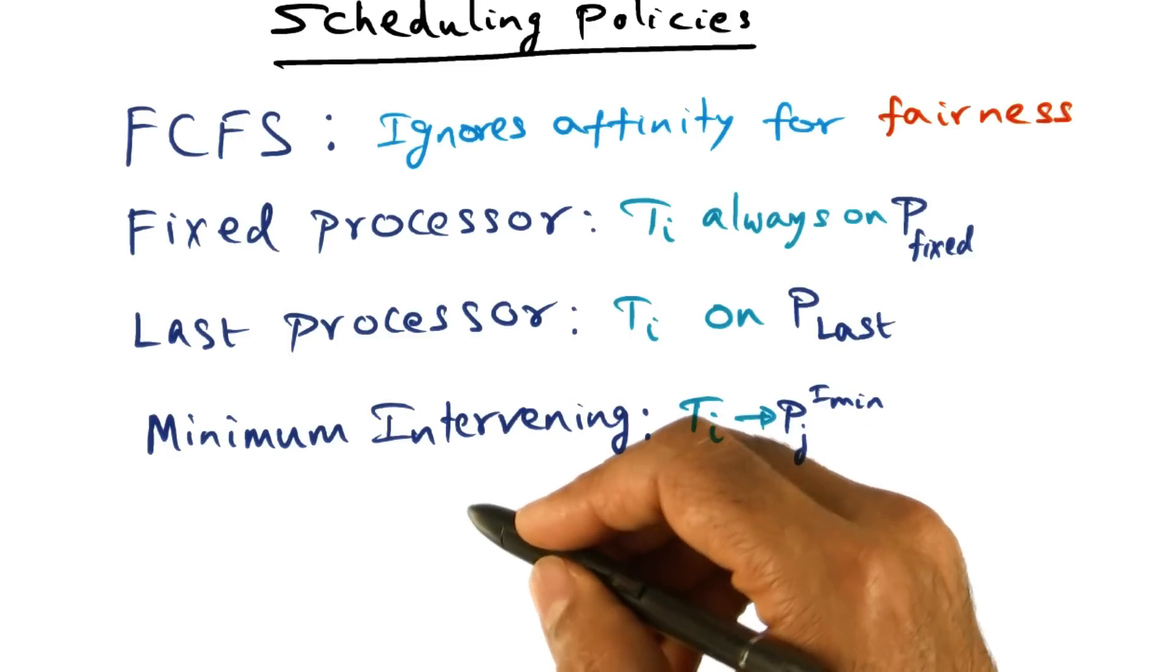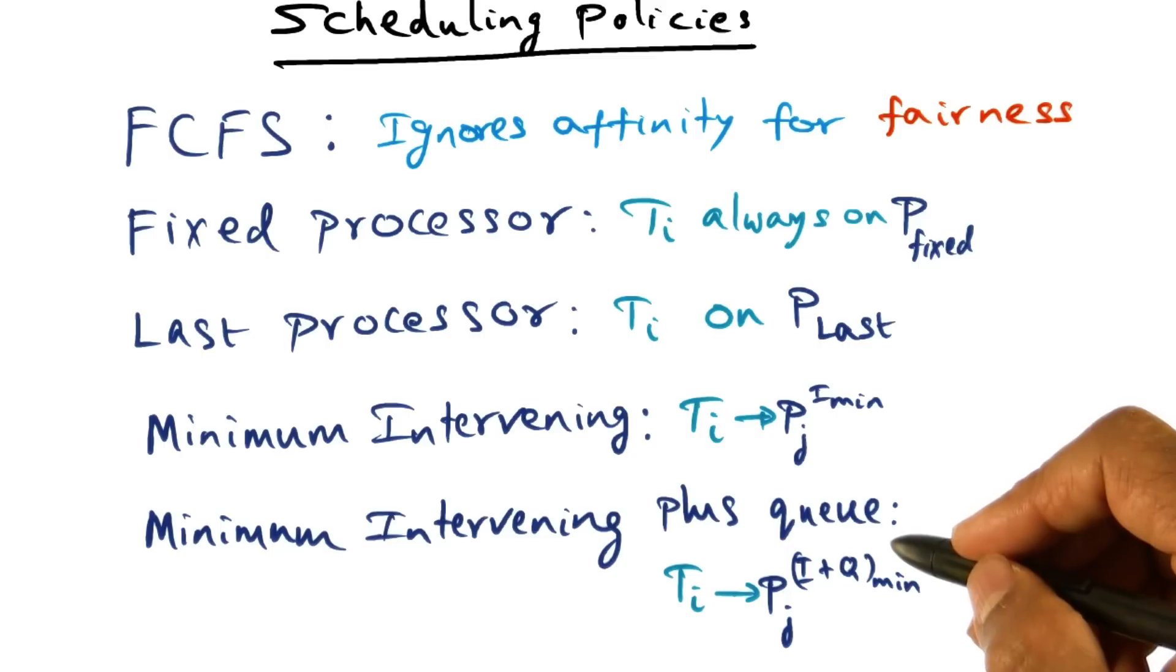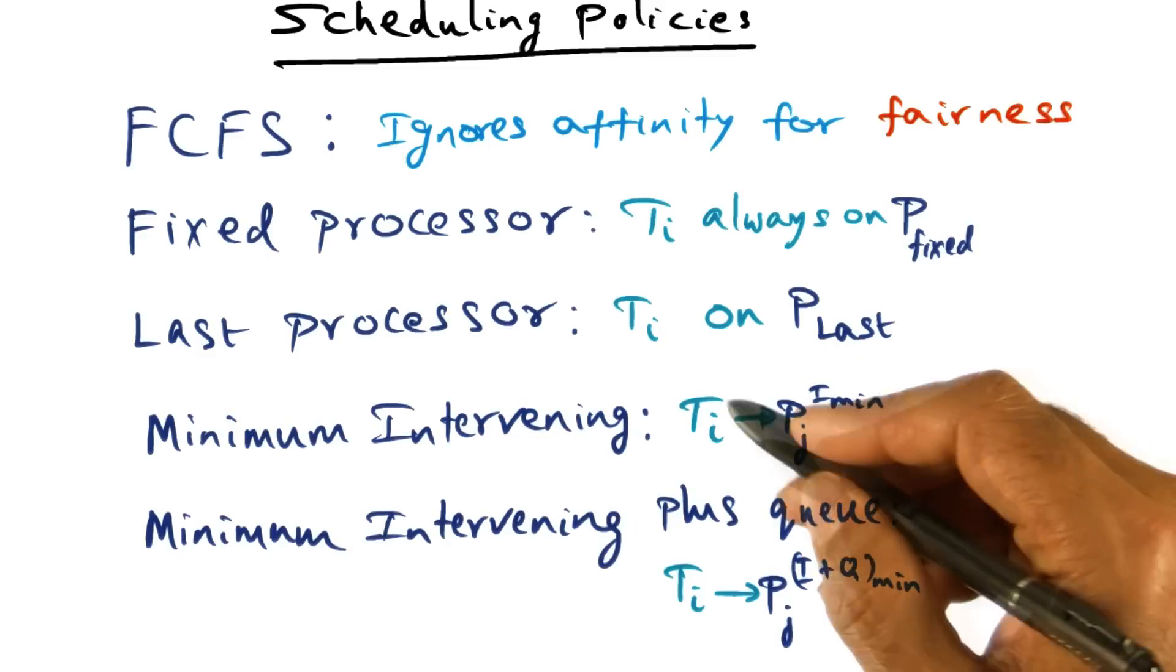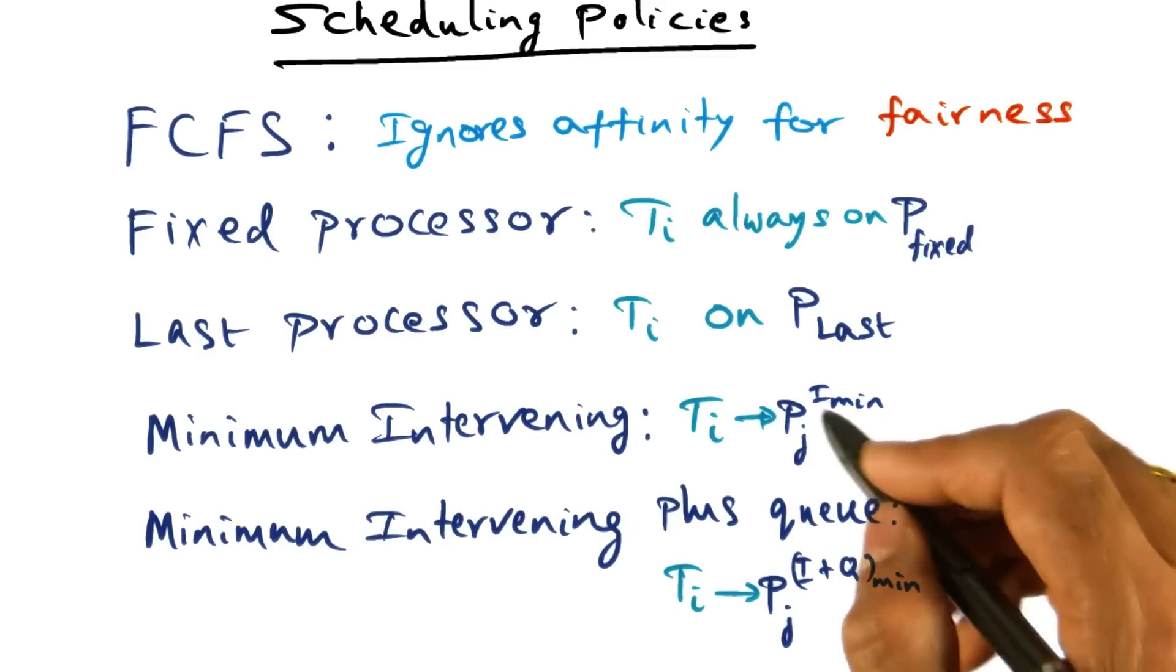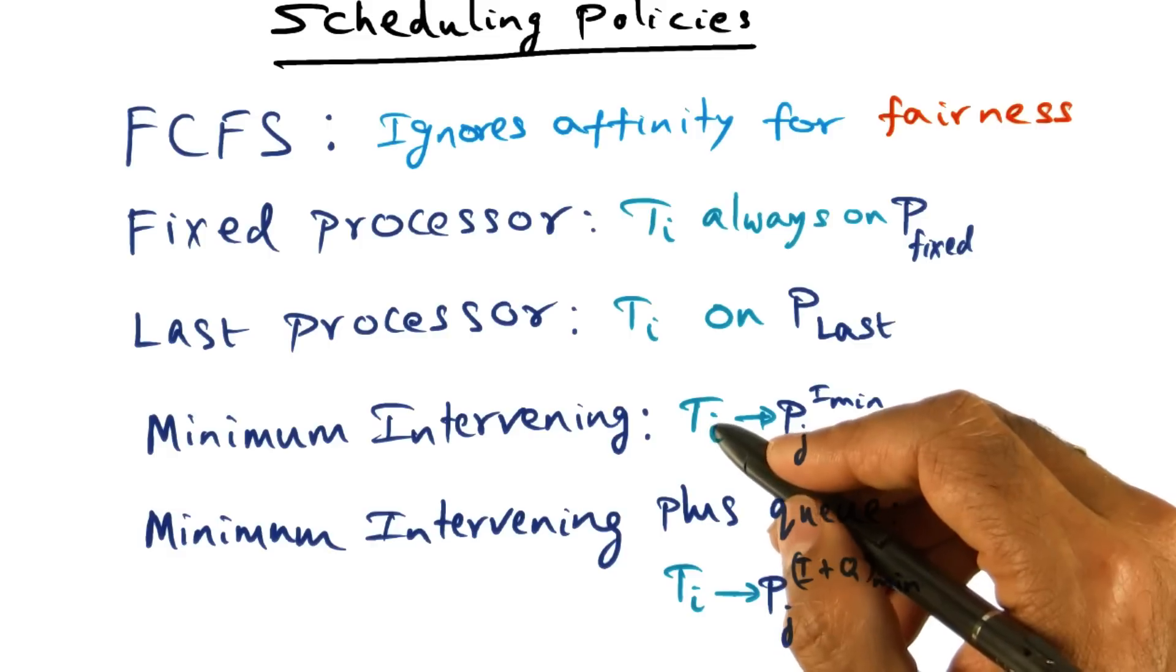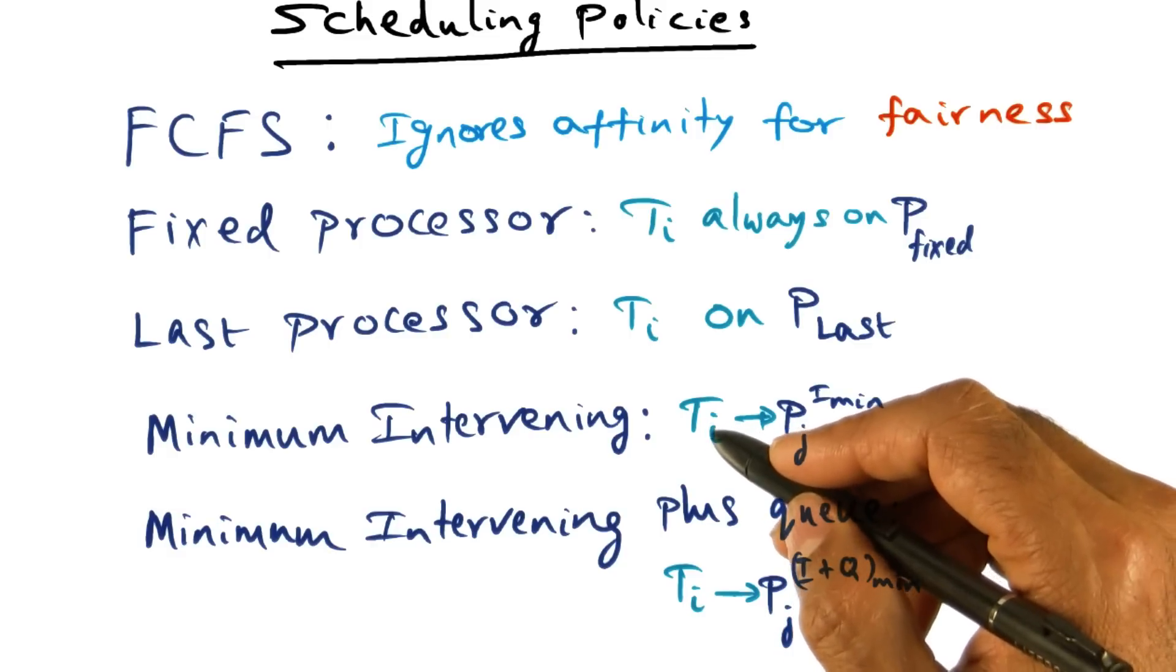The last policy I'm going to introduce you to is called minimum intervening plus queuing. The idea is still the same, that I want to look at the intervening threads that ran on a particular processor with respect to this thread that I'm trying to schedule at this point of time.